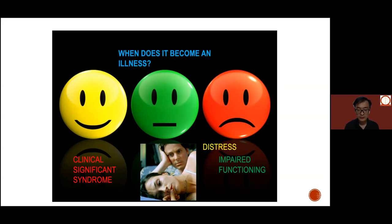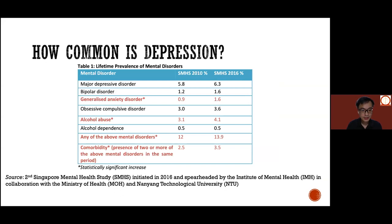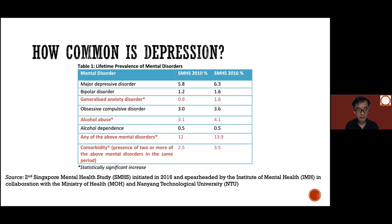How common is depression? From this table, you can see it is not uncommon. Major depressive disorder had a lifetime prevalence of about 5.8% in 2010 — meaning about six percent of the population can expect to have a depressive episode over their lifetime. Measured again in 2016, it was about 6.3%, so approximately one in 25. It is common.